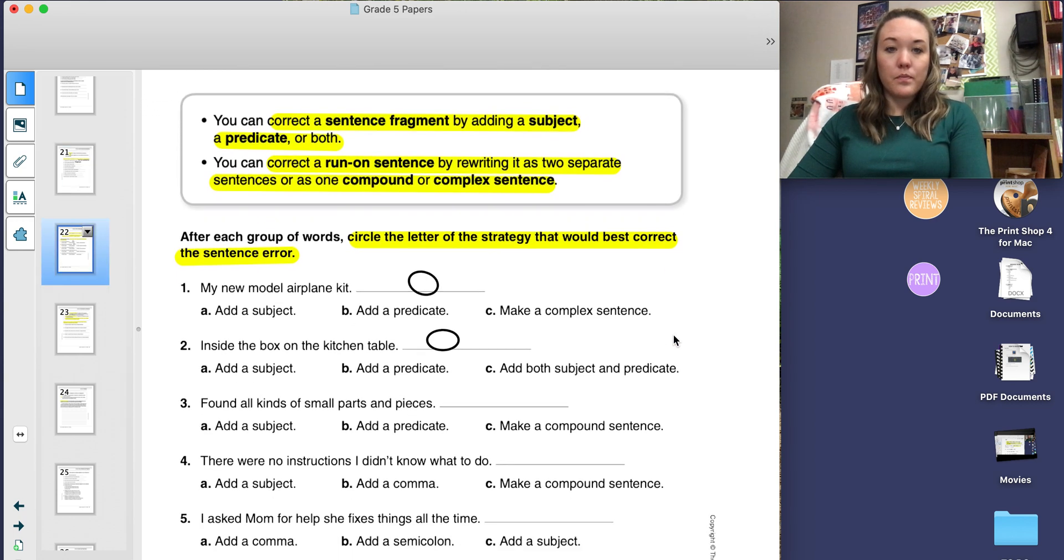Page 22 is looking at how to correct sentence fragments and run-ons. The box at the top says you can correct a sentence fragment by adding a subject, a predicate, or both. You can correct a run-on sentence by writing it as two separate sentences or as one compound or complex sentence. The directions on this page say, after each group of words, circle the letter of the strategy that would best correct the sentence error. Let's do two together.